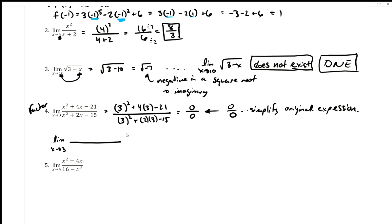I've got my big fraction, and I'm trying to factor the top using the guess-and-check method. Trinomials factor into two binomials, and my focus is x² — x times x makes x². I need factors of 21 that add up to positive 4. The options are 1 and 21, or 3 and 7. Since positive 7 and negative 3 multiply to 21 and add to 4, I use (x - 3)(x + 7). Always check with FOIL.